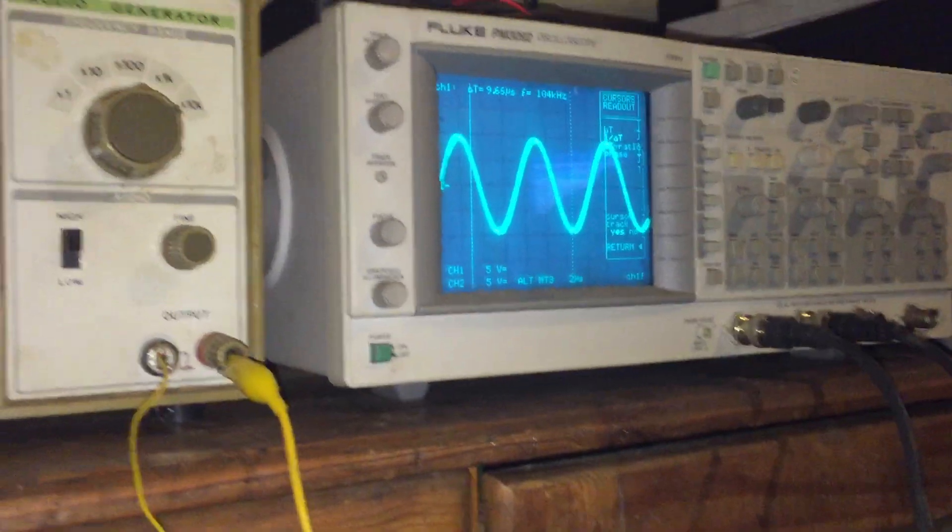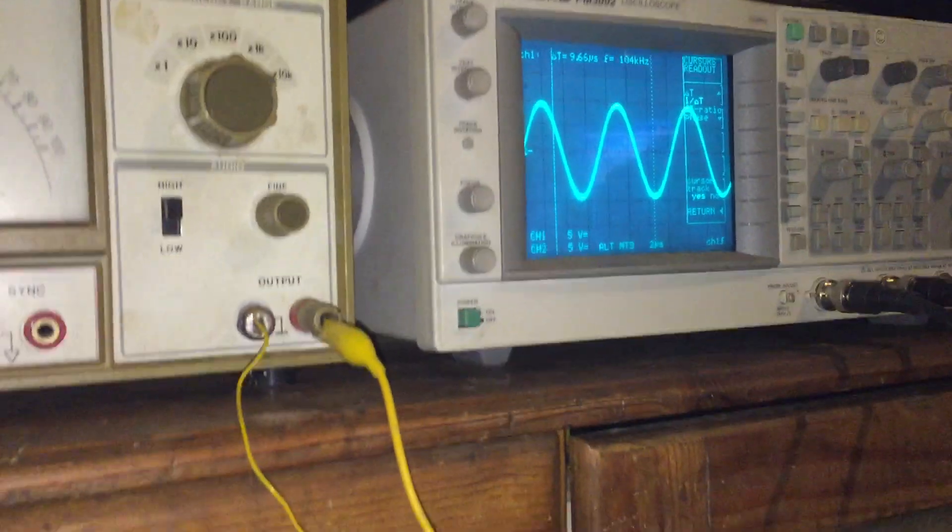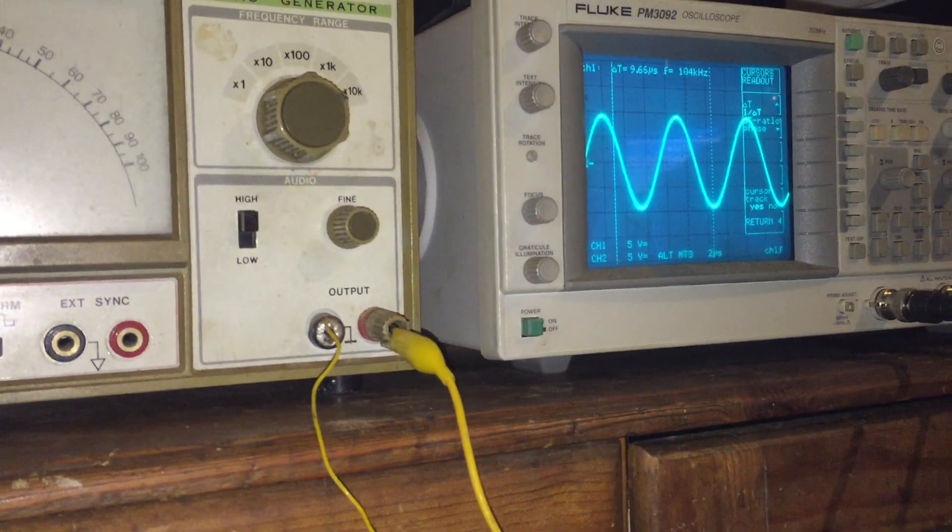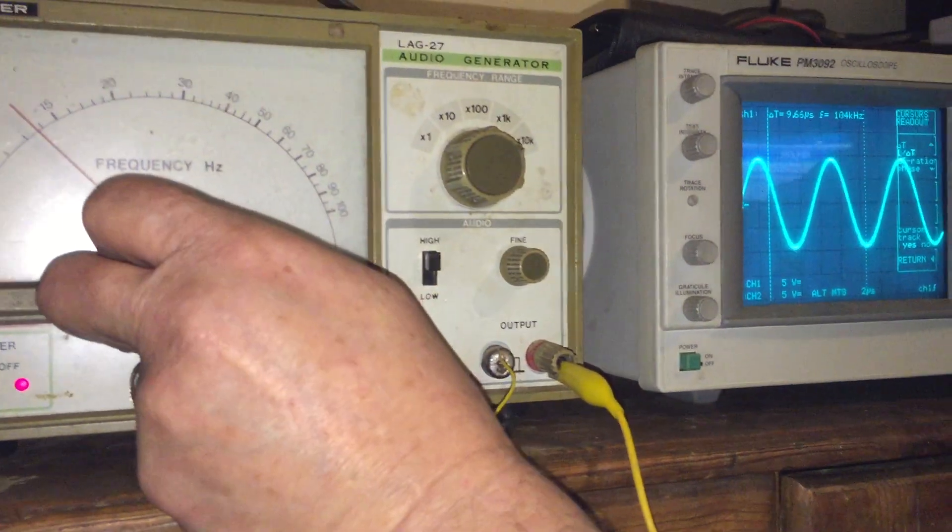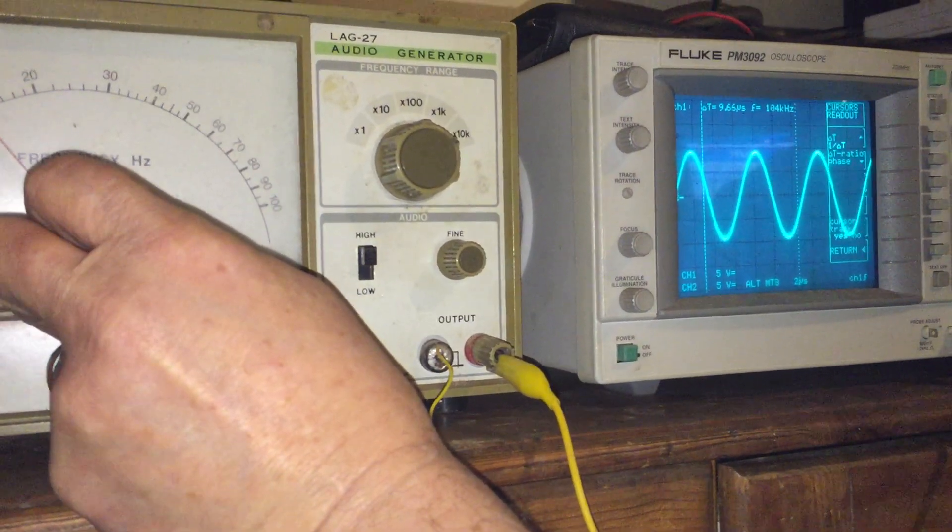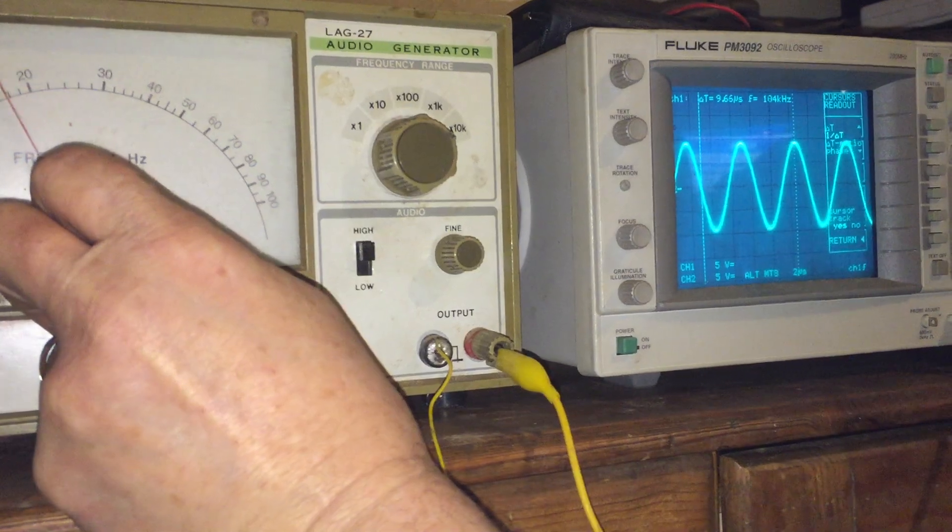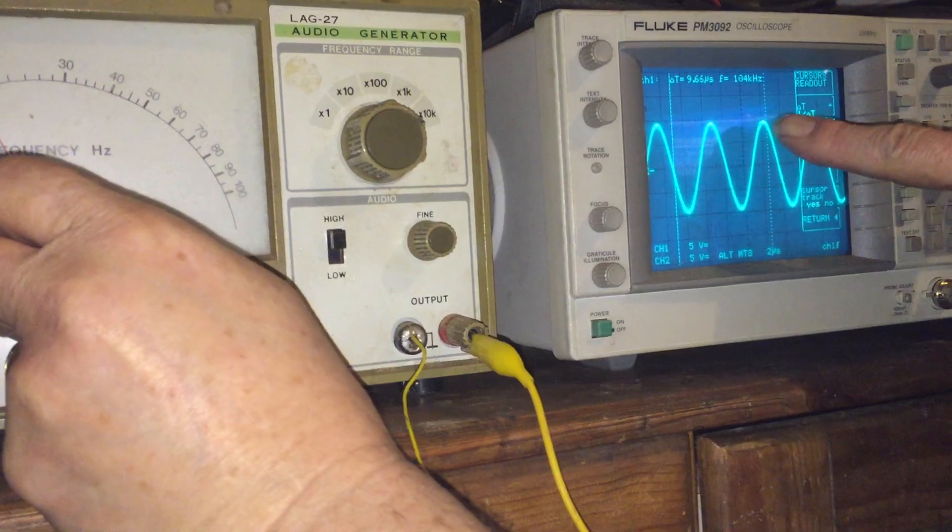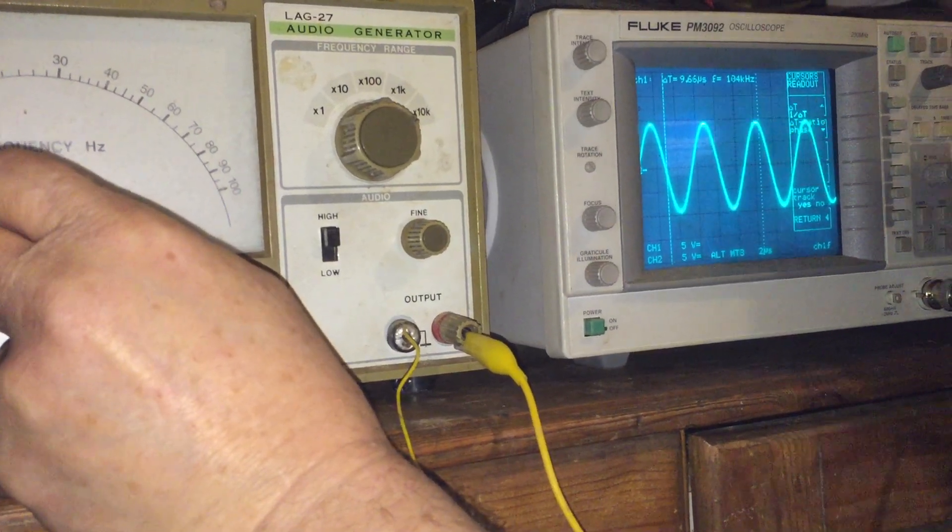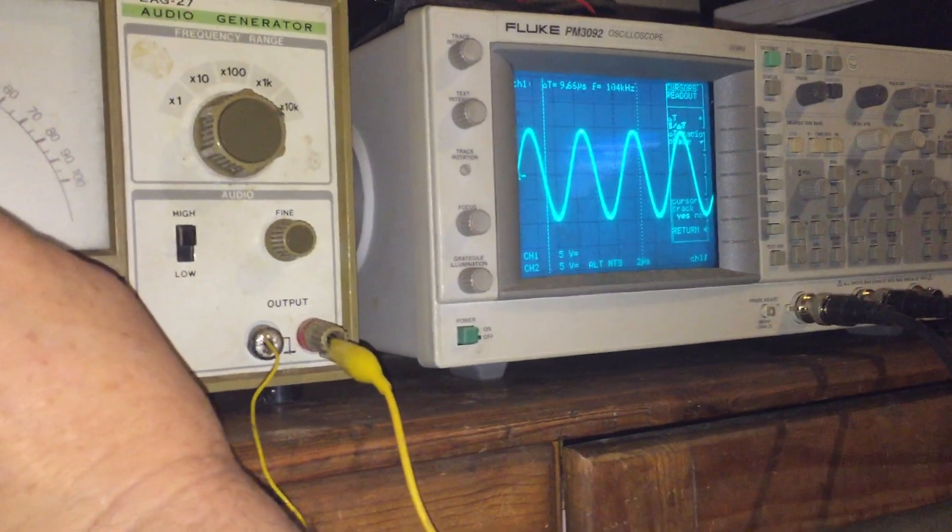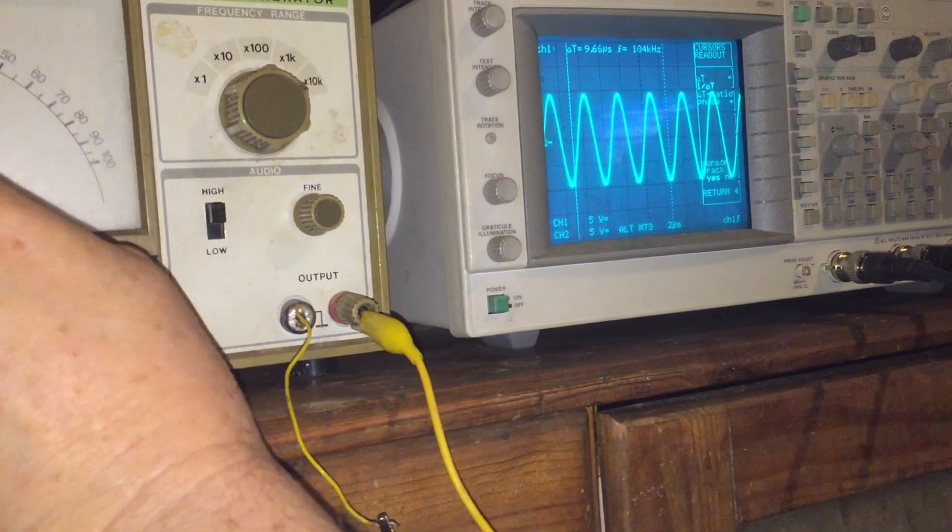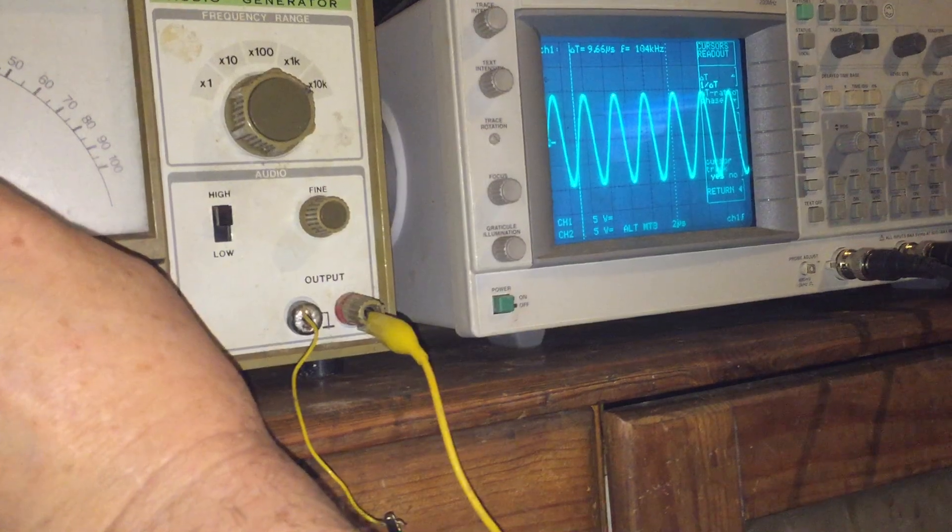We do have about 0.2 of a volt already on the DC. Right, anyway, we'll start coming up the frequency range and you'll see we're injecting, as you can see, 5 volts per centimeter, so approximately just shy of 20 volts peak to peak. Coming up the frequency, there's 30 kilohertz. I'll expand the trace.